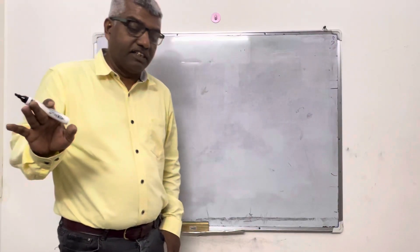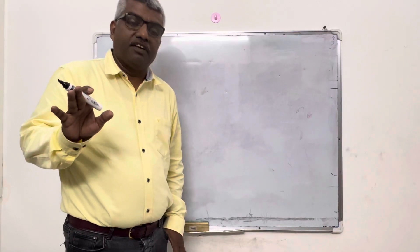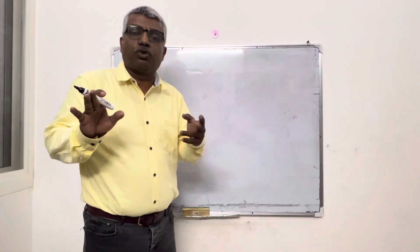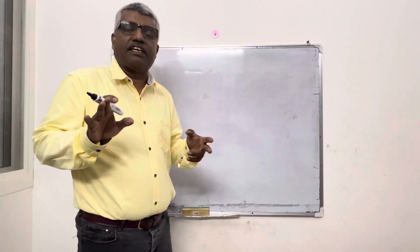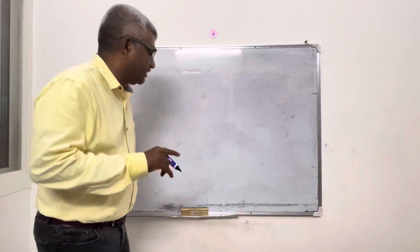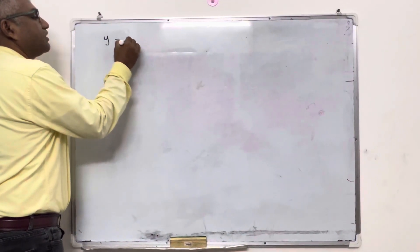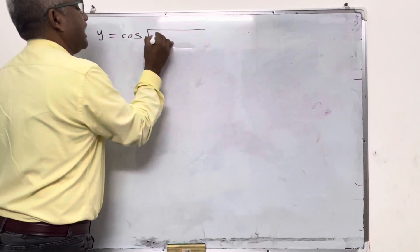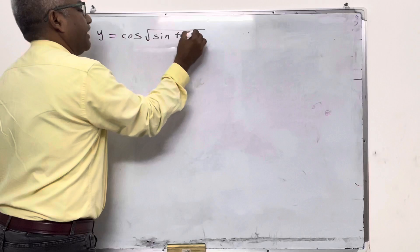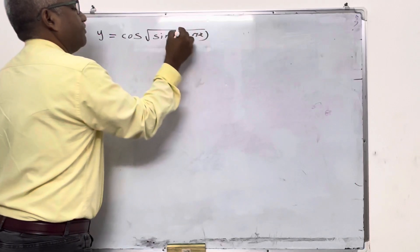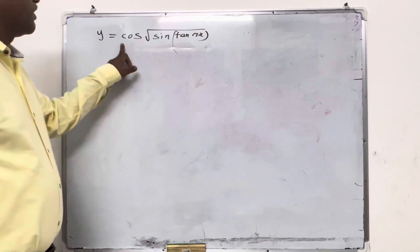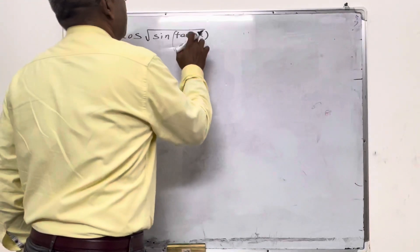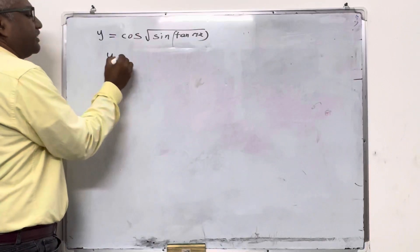We are going to see differentiation of combined trigonometry. Combined trigonometry is not a true three trigonometry sign. Let us see: y equal to cos square root of sine tan pi x.